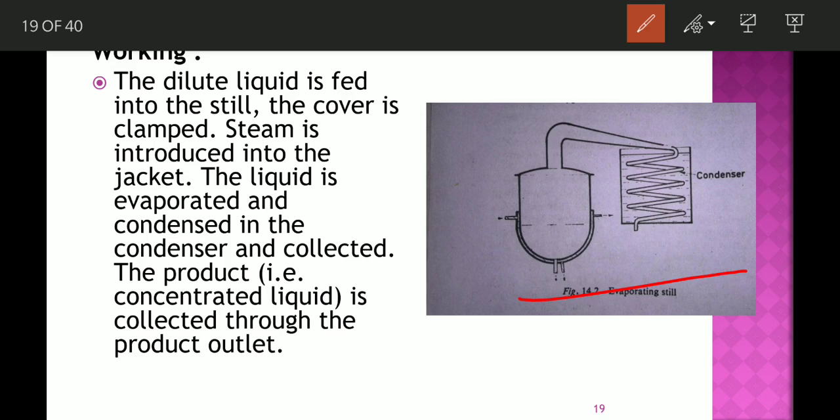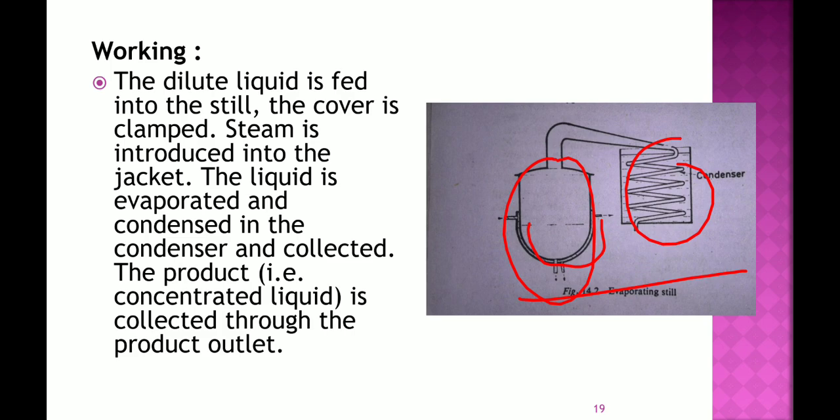Basically, this equipment is called the evaporating steel. Here you have a cylinder, and this cylinder is a jacketed cylinder through which steam is passed, and it is connected with the condenser. Now let's talk about the working of this evaporating steel.